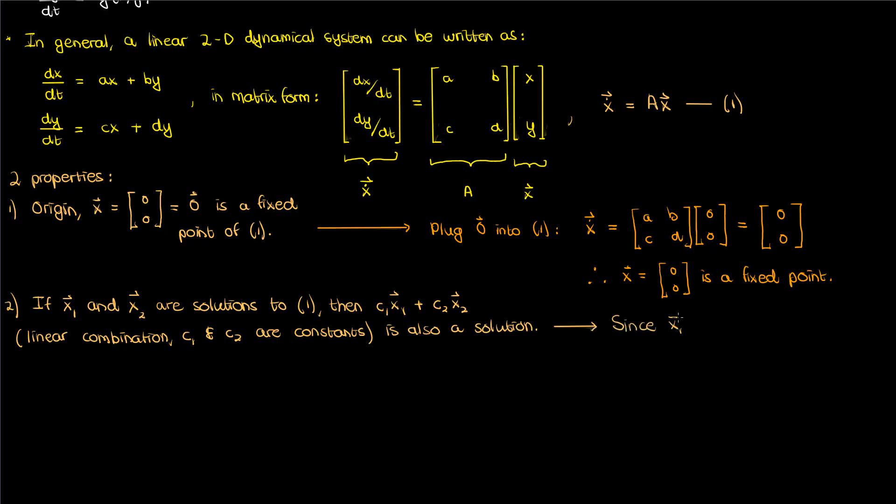Now because x1 and x2 are individually solutions to our linear dynamical system, these two equations hold where the derivative of x1 equals A times x1 and the derivative of x2 in time equals A times x2. And now if I plug in c1 x1 plus c2 x2 into equation 1, this is what I get.